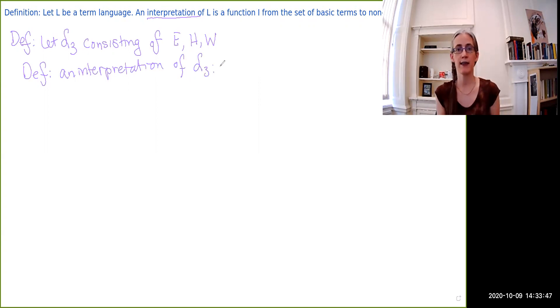We can then define an interpretation of L3 simply by saying what are the objects that are associated with each of these terms. And I'm going to introduce a particular type of notation. So we're going to have new notation. This I is our interpretation. And then we put the thing that we're interpreting in parentheses.